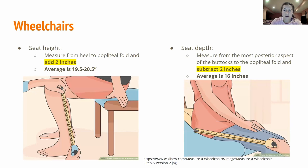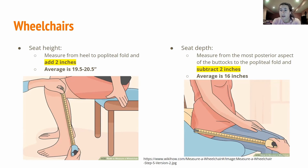These are pictures from Google — from a WikiHow on how to measure a wheelchair. With wheelchairs, this is probably the most common thing that's going to show up on the boards. You're going to have a situation where someone's measuring a wheelchair and something's going wrong — the patient's wheelchair is too wide or too narrow, there's chafing on the posterior and distal thigh because it's fitted wrong.